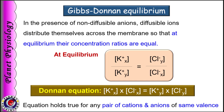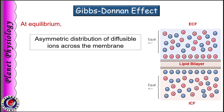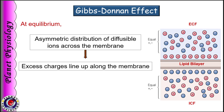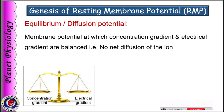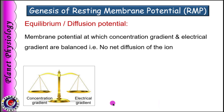Due to the Gibbs-Donnan effect, there is asymmetric distribution of diffusible ions across the membrane, and whatever excess charges exist line up along the membrane. As cell membrane is very thin, it acts as a capacitor and hence attracts opposite charges which line up on the other side, creating a polar structure or electrical gradient across the membrane. The membrane potential at which diffusion due to concentration gradient is exactly balanced by the electrical gradient, so there is no net diffusion, is called equilibrium potential or diffusion potential.